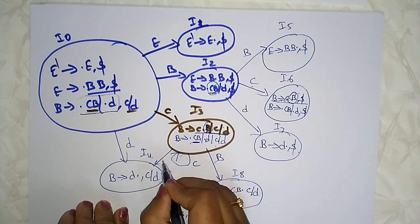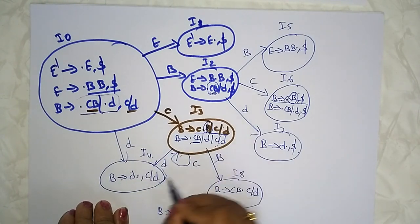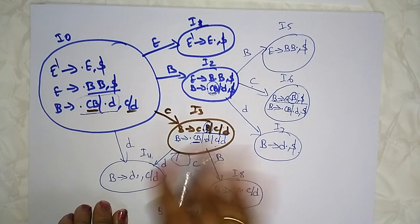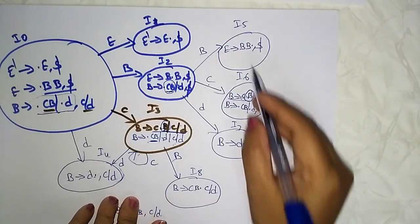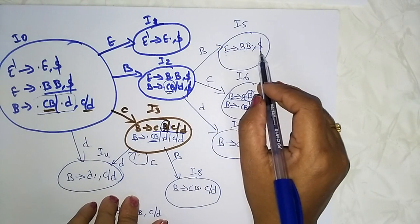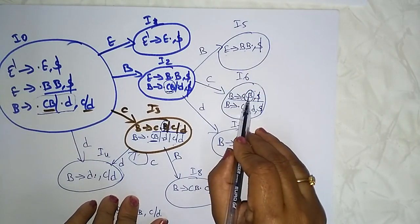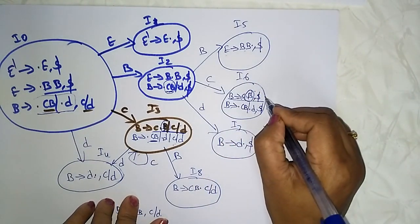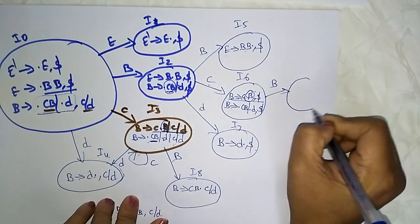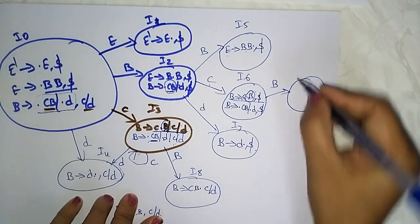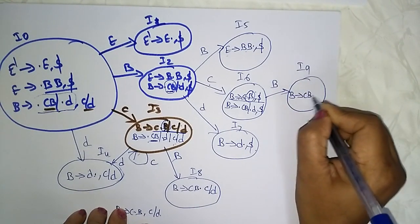Taking 'd': B → D · with c/d lookahead. This state is over. Checking remaining states — dot B is present, so on 'b' as input we get I9: B → CB · with dollar lookahead.